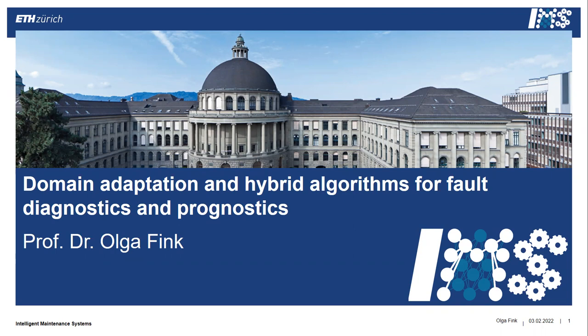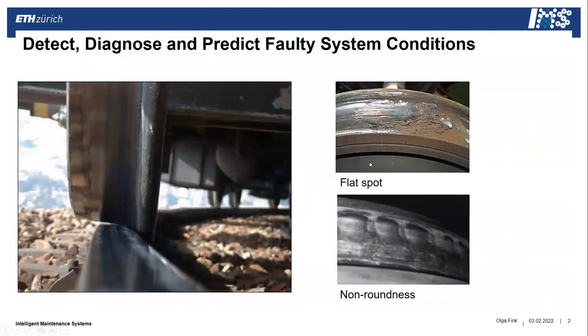Please feel free to interrupt me if there are any questions. What we're typically trying to solve is, on one hand, to detect faults, but then also not just to detect them but to distinguish between different fault types. Looking at a rail wheel, different fault types may be a flat spot or a non-roundness condition.